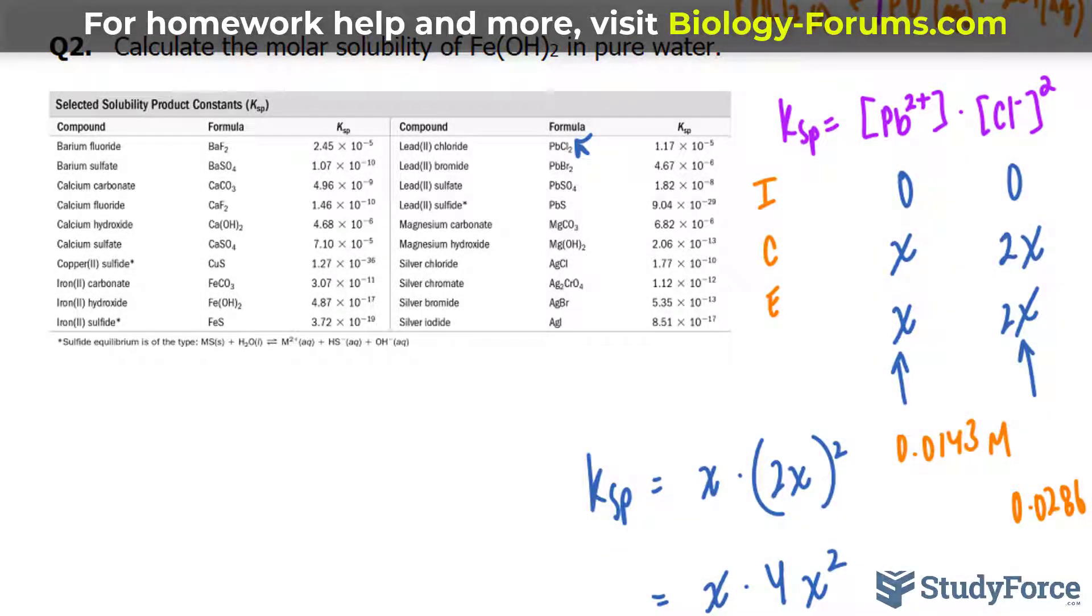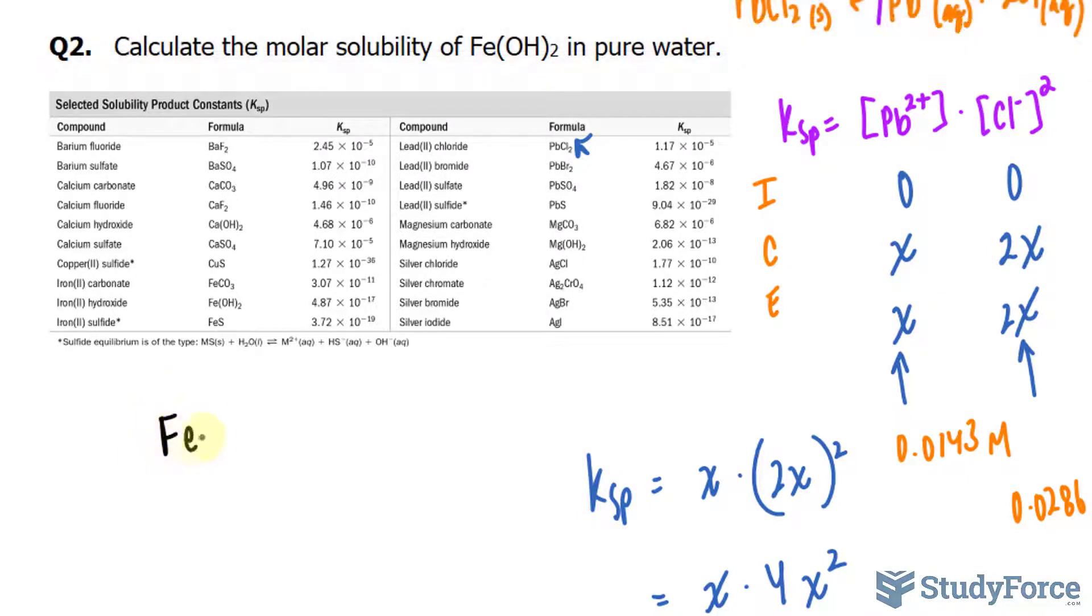So let's begin by writing out the dissociation of iron two hydroxide in pure water. It should look like this. FeOH2 yields iron ions, and that's Fe2+, plus OH-, and to balance this out, we'll put a two.